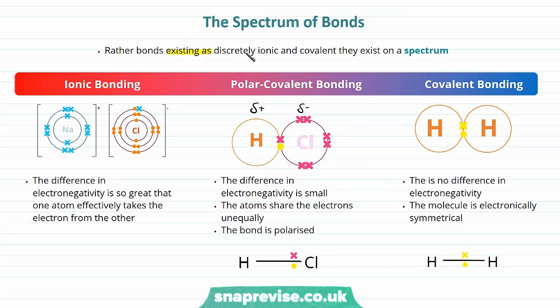This allows for what we call a spectrum of bonds - rather than bonds existing as discretely ionic and covalent, they exist on a spectrum. At one end we have ionic bonding where the difference in electronegativity is so great that one atom effectively takes the electron from the other. At the other end we have covalent bonding with no difference in electronegativity. In the middle we have polar covalent bonding where the difference in electronegativity is quite small and the atoms share the electrons unequally.